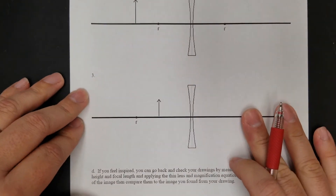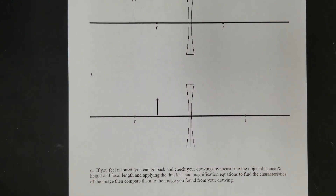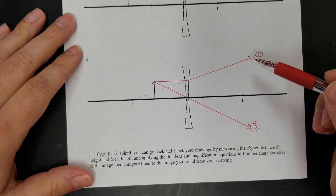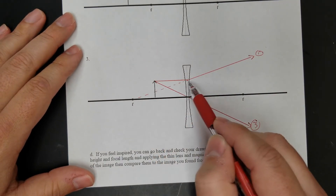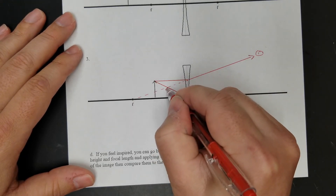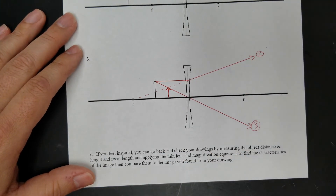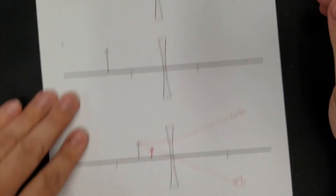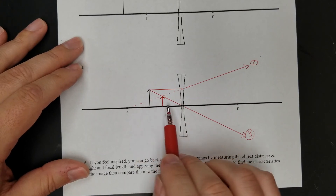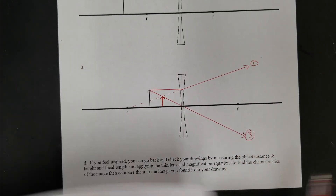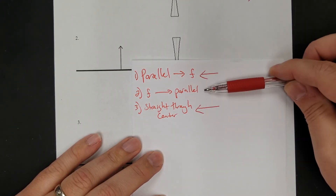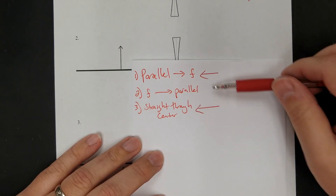Let's try one inside the focal length of a diverging lens to see if it makes a difference like it did with a converging lens. Ray 1 goes parallel, then diverges from the antifocal point. Ray 3 goes straight through the center. They meet right there — still a virtual image because it's upright, just a little bit larger. Diverging lenses always make virtual images and simply shrink the object depending on how far it is. Ray diagrams for lenses are easy as long as you remember ray 1 and ray 3.